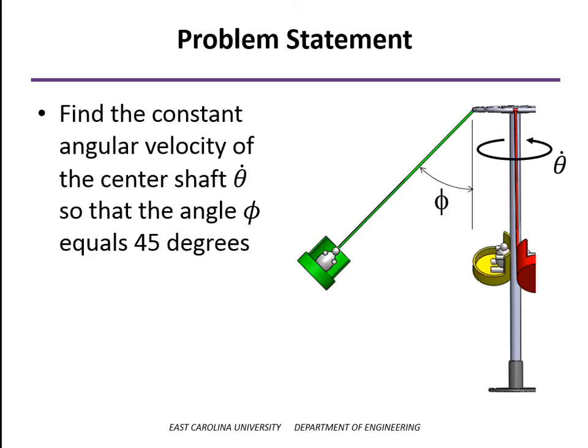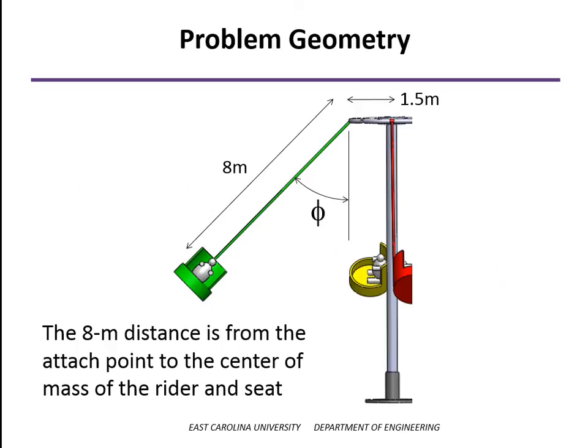So for this problem, we need to know a little bit more of the geometry. From the attachment point down to the center of mass of the rider and the seat is 8 meters. And then that attachment point is a meter and a half away from the axis of the central shaft. And again, you see that angle phi that we're trying to determine.